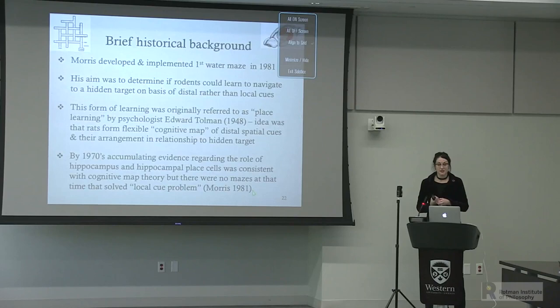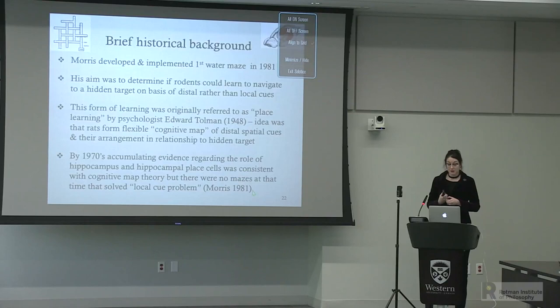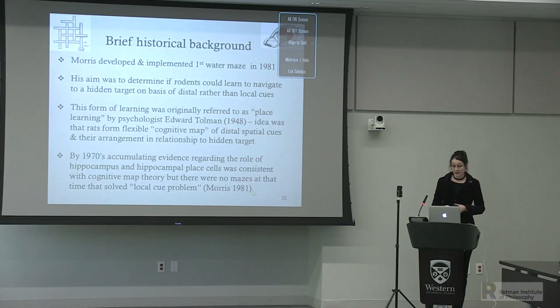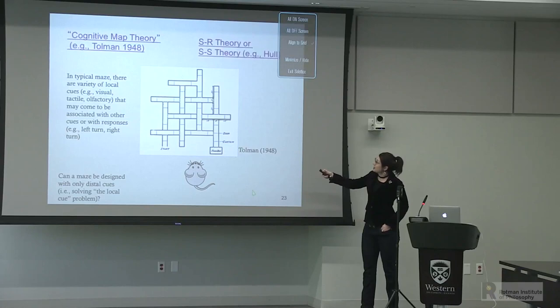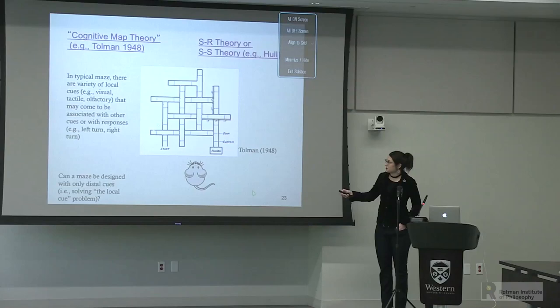Morris developed and implemented the first water maze in 1981. His aim was to determine if rodents could learn to navigate to a hidden target on the basis of distal rather than local cues. This form of learning was originally referred to as place learning by psychologist Edward Tolman—the idea being that rats form a flexible cognitive map of distal spatial cues and their arrangement in relationship to a hidden target. By the 1970s there was accumulating evidence regarding the role of the hippocampus and hippocampal place cells consistent with the idea that rats form a cognitive map, but there were no mazes that solved the local cue problem.